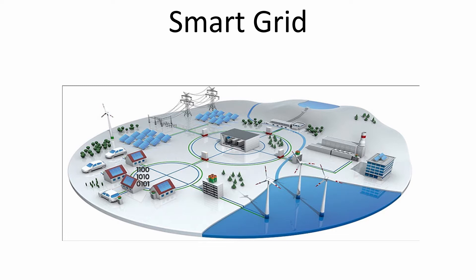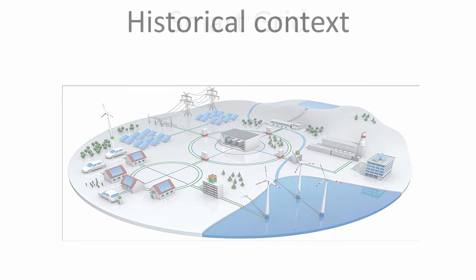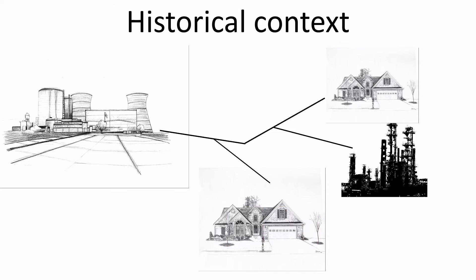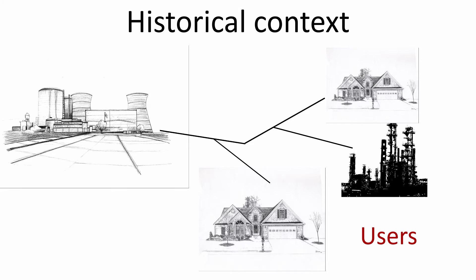Let's define the historical context. The first alternating current power grid system was installed in 1886 in Massachusetts. At that time the grid was a centralized, unidirectional system of electrical power transmission, electricity distribution and demand-driven control. So it was a central generation device connected to a series of users.